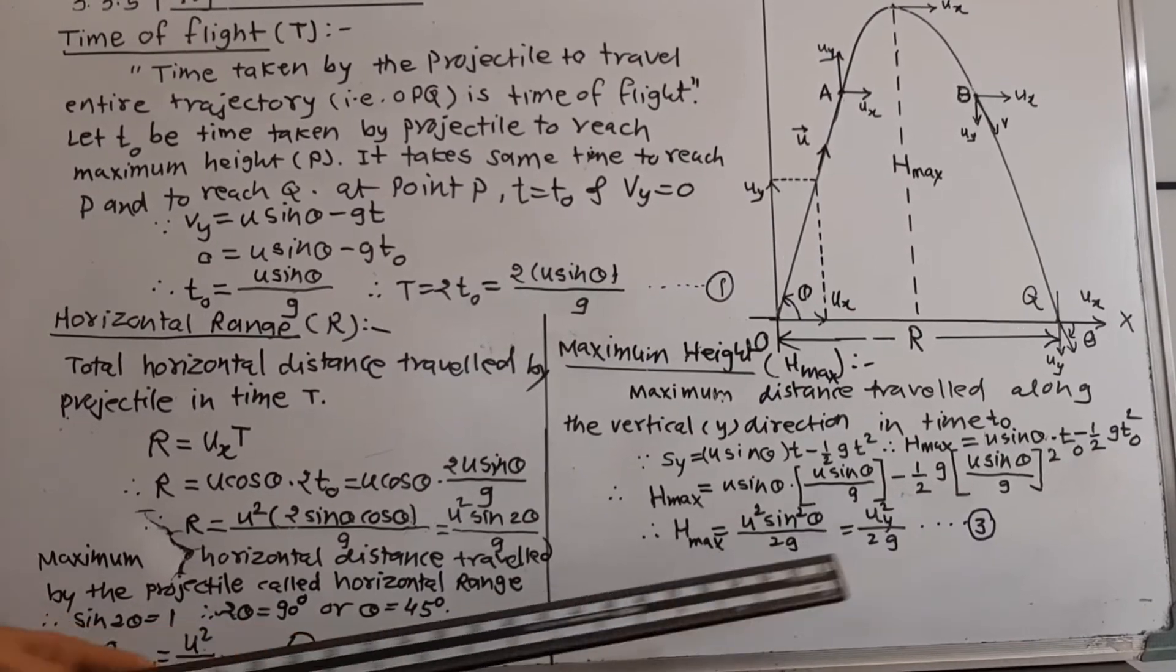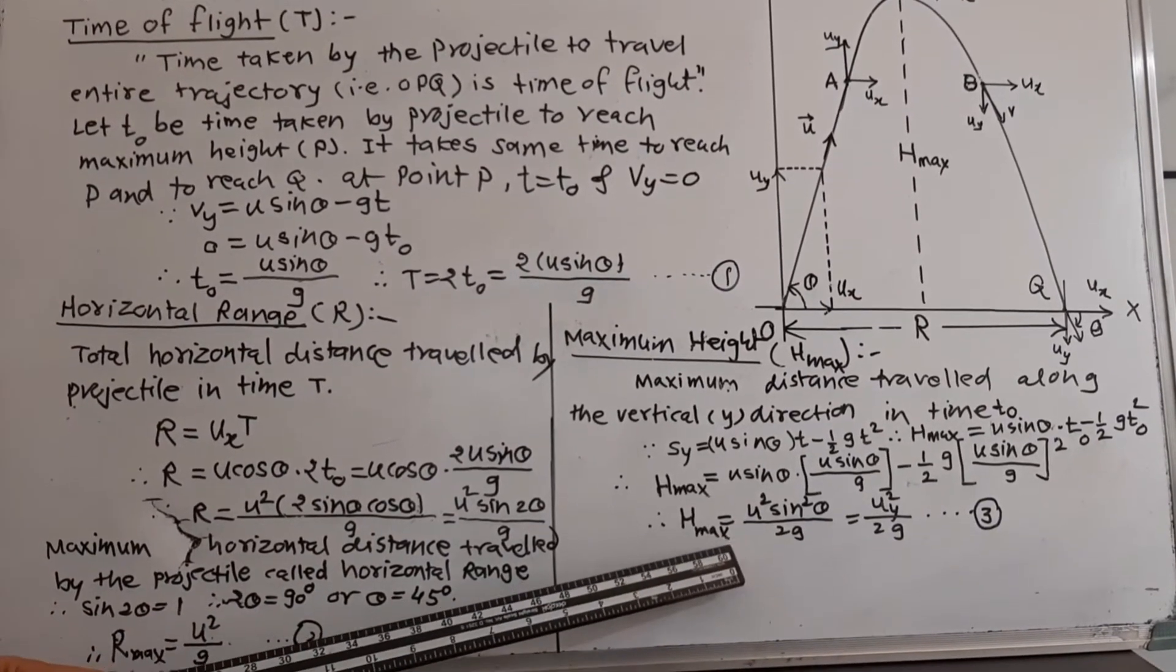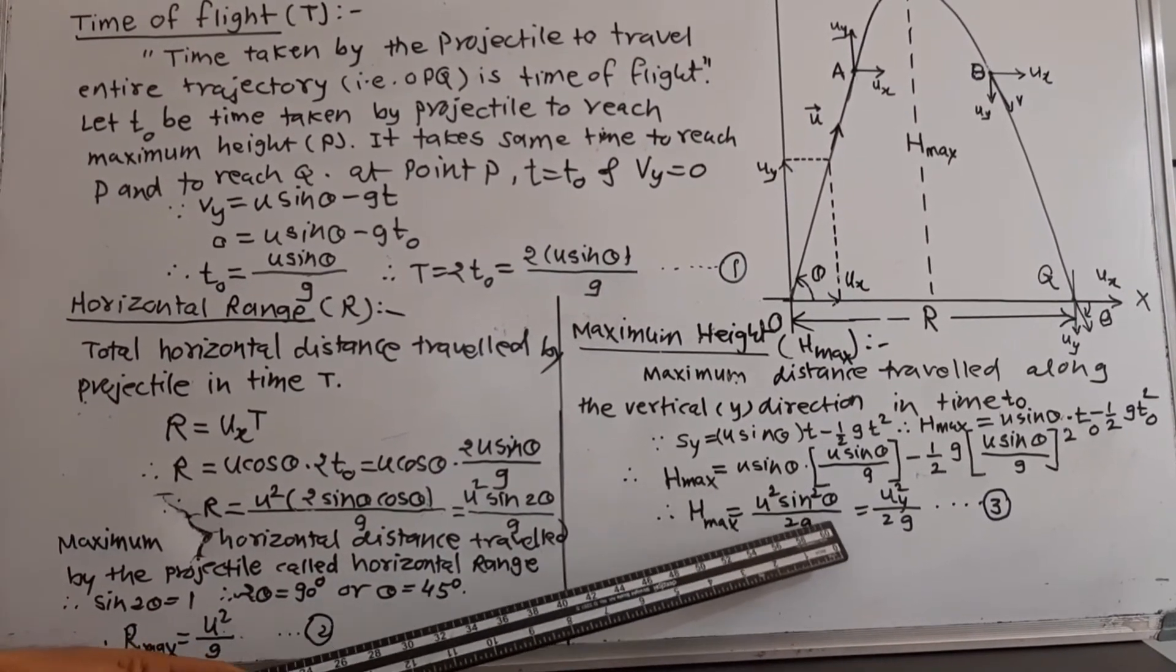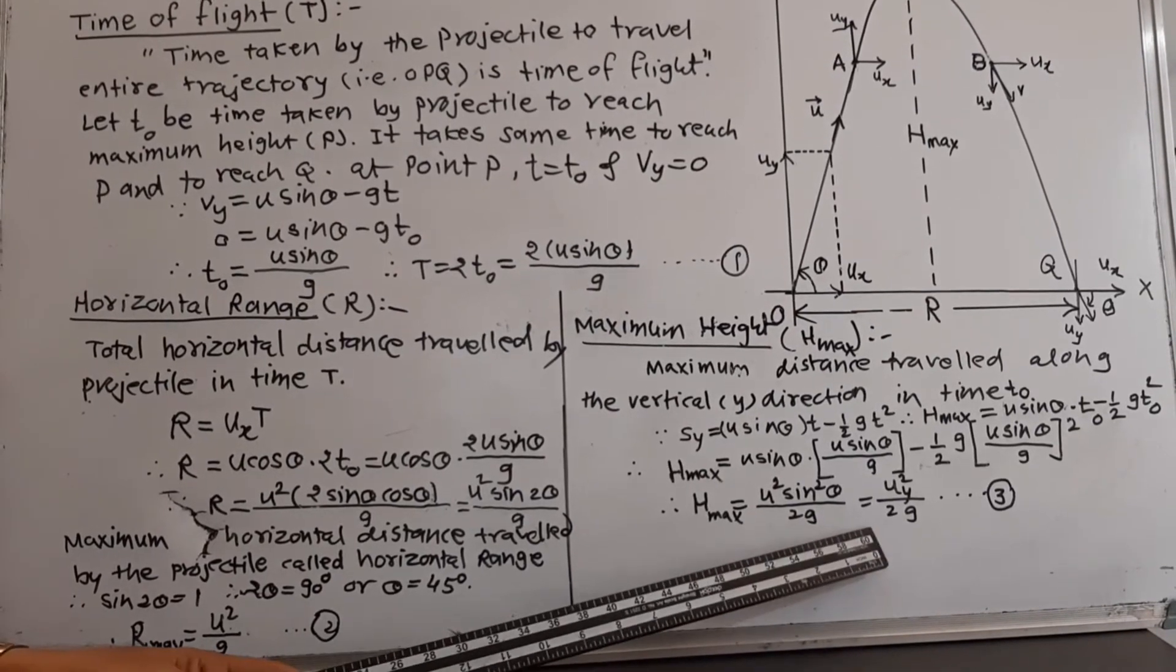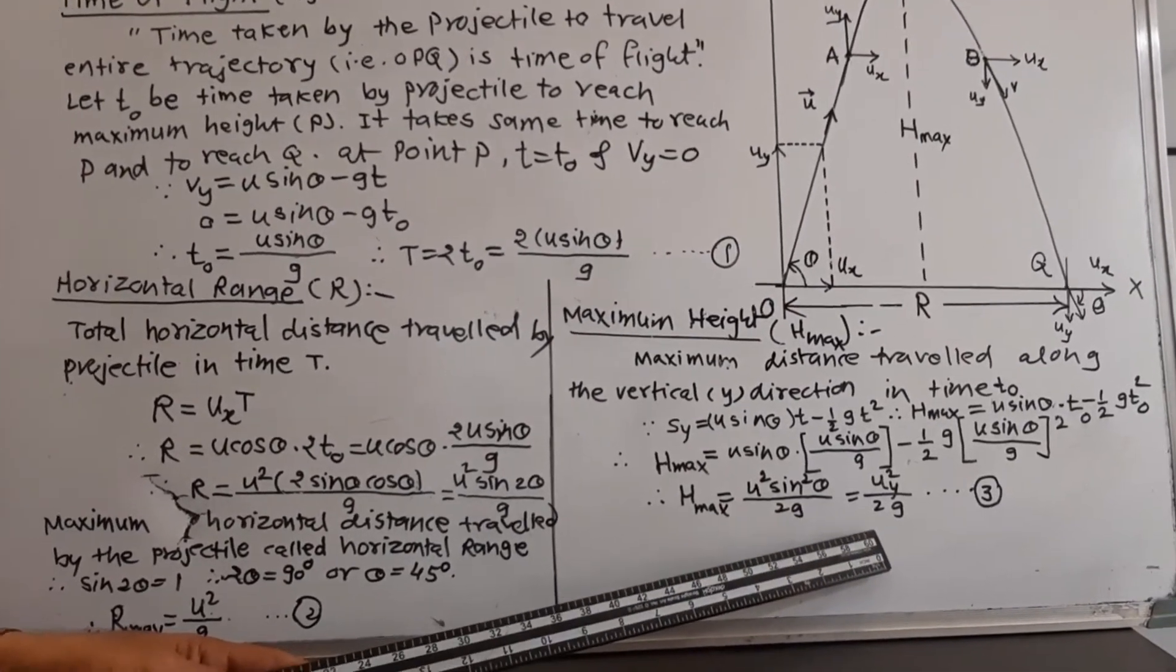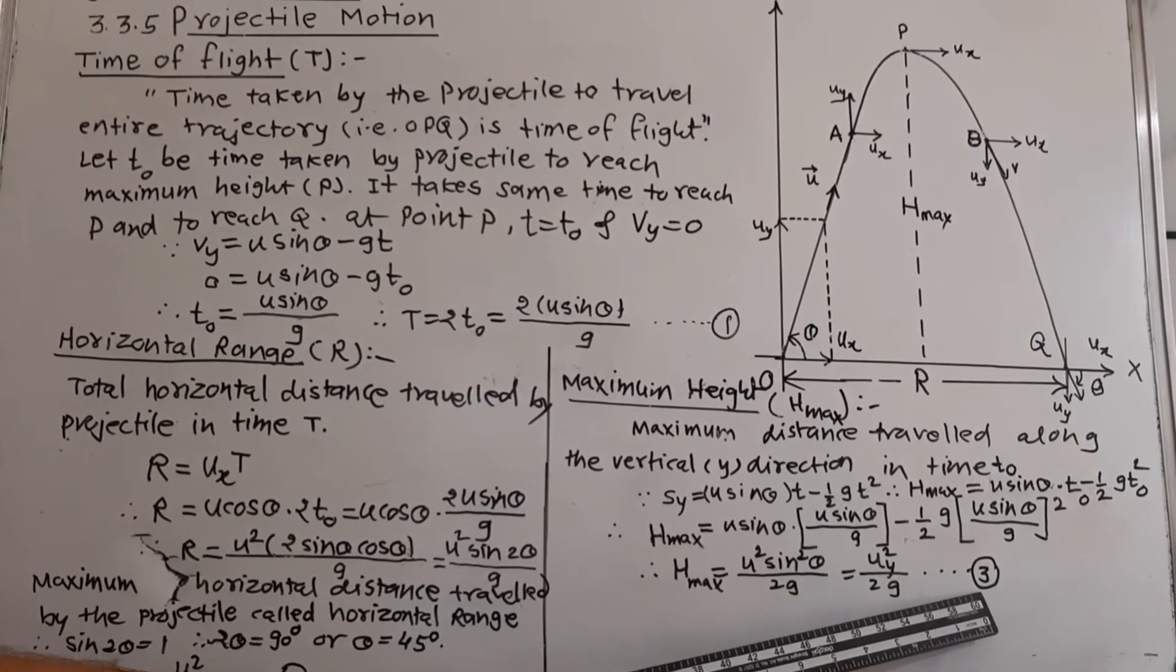If you simplify this, you will get H max to be U square sin square theta upon 2G, which is Uy square upon 2G. That is our equation number 3.